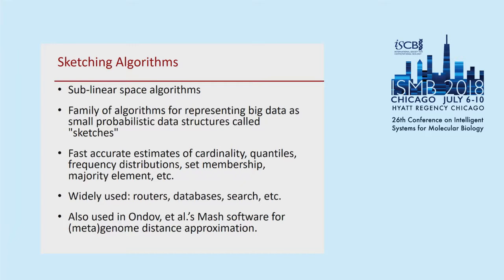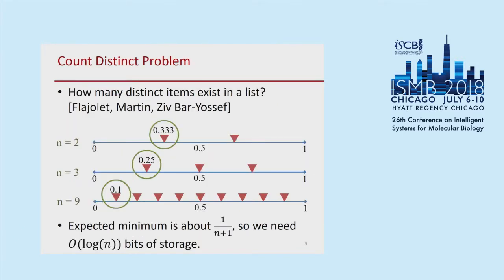More recently in the bioinformatics world, the MinHash sketch formed the basis of Ondov et al.'s Mash software for metagenomic distance. To make the idea of sketches more concrete, let's introduce a simple one. Let's talk about the minimum value estimator for the count distinct problem. Suppose I asked you how many distinct items are in a list — well, that's easy, right? It's just a matter of counting.